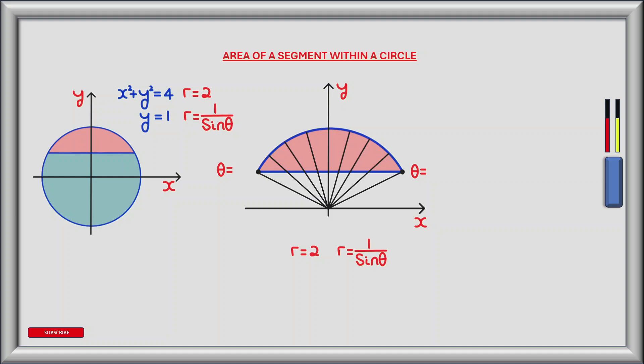The two polar equations are r equals 2 for the circle and r equals 1 divided by sin theta for the horizontal line. Equating the two gives 2 equals 1 divided by sin theta, and therefore sin theta equals 1 half. So the first angle where the horizontal line and the circle intersect is at theta equals pi by 6 radians. As r rotates counterclockwise, the next time sin theta equals 1 half occurs where theta equals 5 pi by 6 radians, and this is where the horizontal line intersects with the circle for the second time.